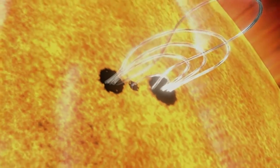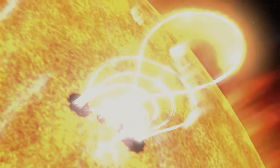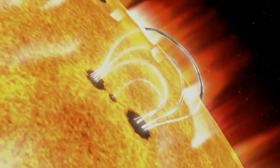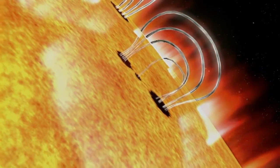Flares happen when the powerful magnetic fields in and around the Sun reconnect. They're usually associated with active regions, often seen as sunspots, where the magnetic fields are strongest.